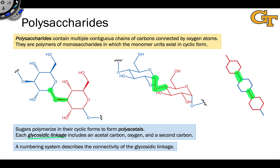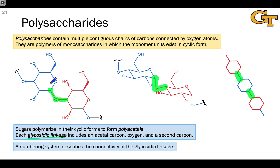As we did for disaccharides, we can number the glycosidic linkages in polysaccharides, and the assumption is that the glycosidic linkages are uniform throughout the length of the polymer. In biochemical contexts, the polymerization of monosaccharides is strictly controlled so that specific types of polysaccharides correspond to a single type of glycosidic linkage. For example, in the blue sugar, carbon 1 — the anomeric carbon — is involved, and in the red sugar, carbon 3 is involved.